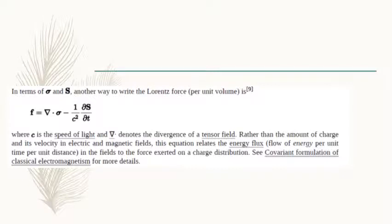This is something which is for higher standards and cannot be asked at this graduate level. But we must have an idea of how things are built up by this Lorentz force. The Lorentz force is used for continuous charge distribution, then for force per unit volume, and finally for electromagnetic waves. Here C is the velocity of light, and the tensor divergence represents a complex field of both scalar and vector quantities.